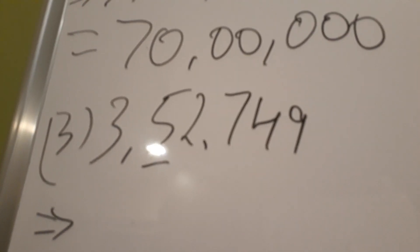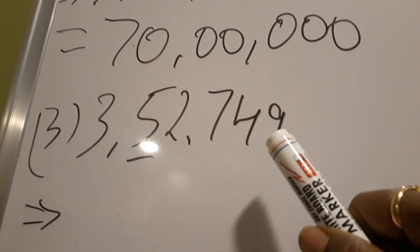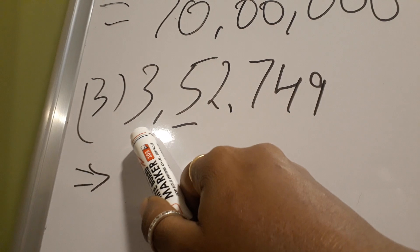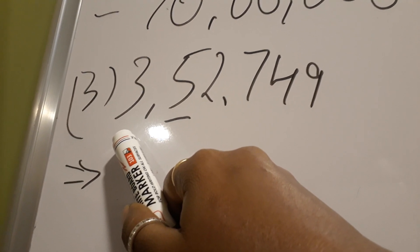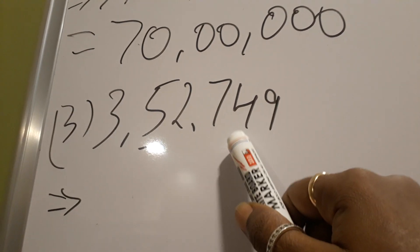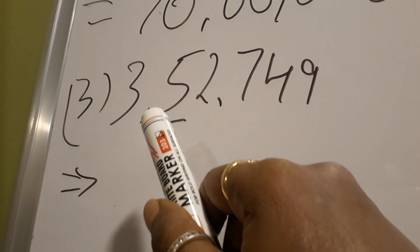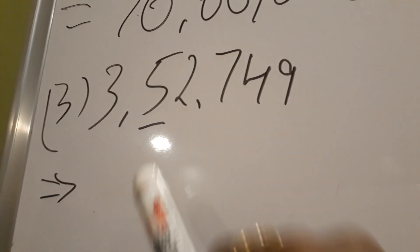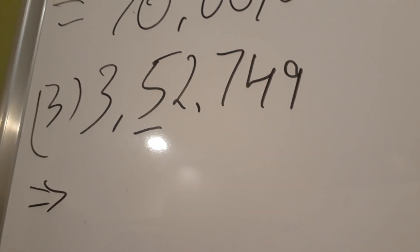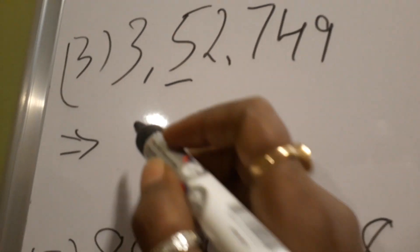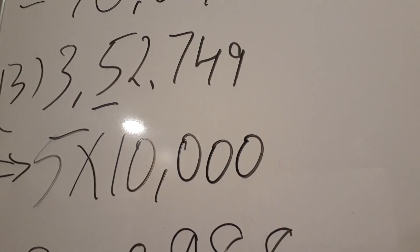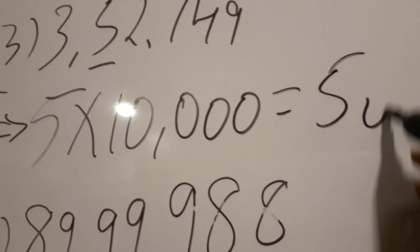Third one. The number is three lakh fifty-two thousand seven hundred and forty-nine. Units, tens, hundred, thousand, ten thousand — five is the digit which is underlined, and five is placed in ten thousands place. Five into ten thousand gives us an answer of fifty thousand.